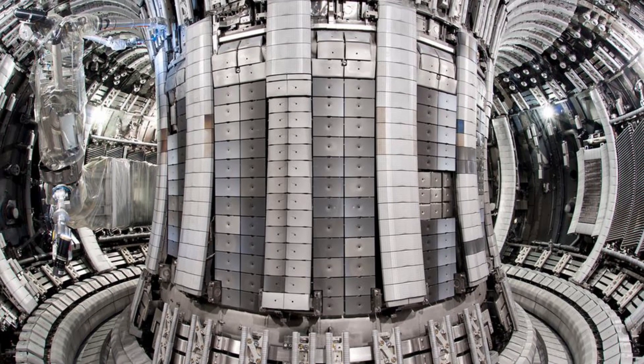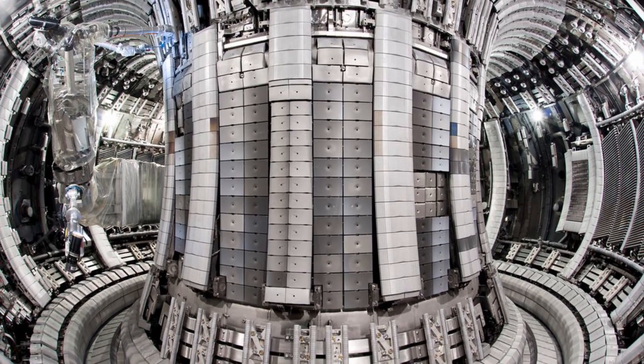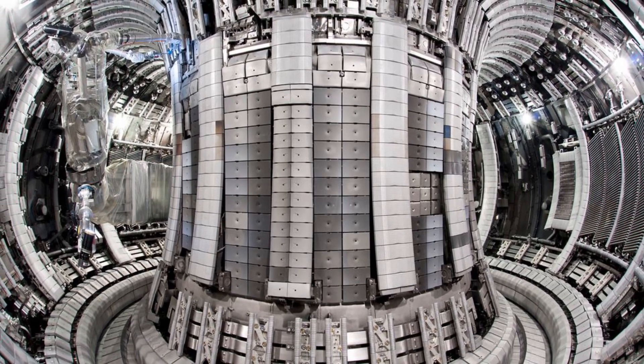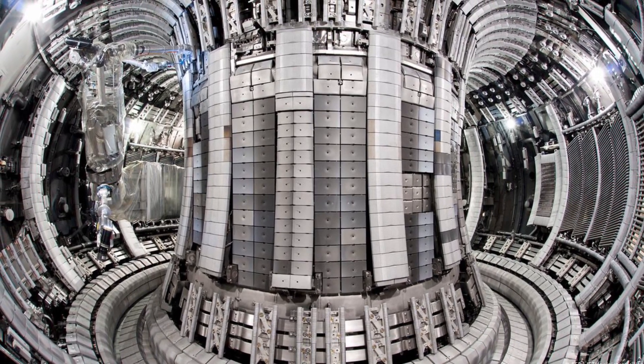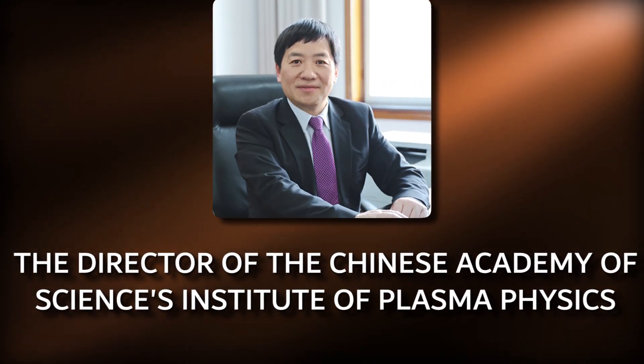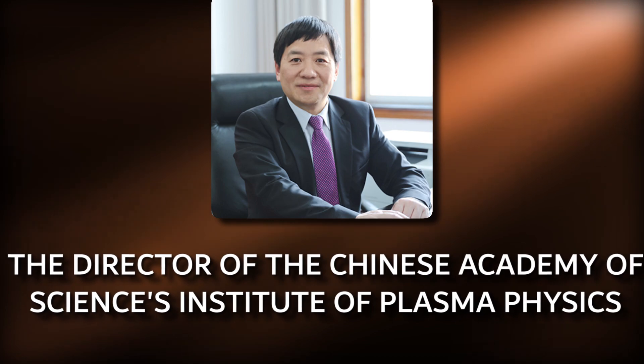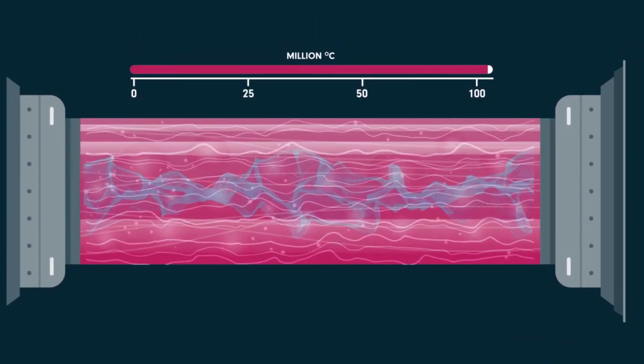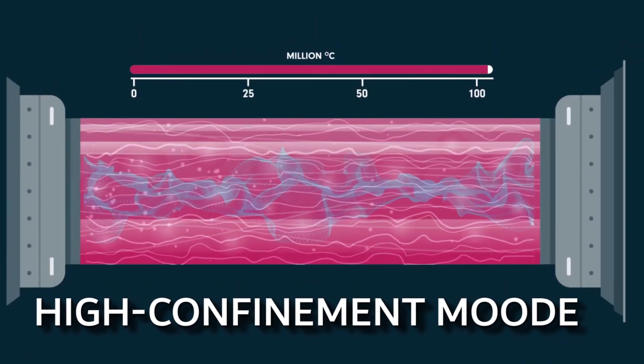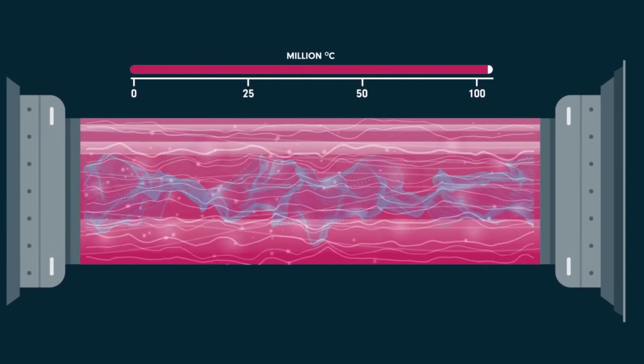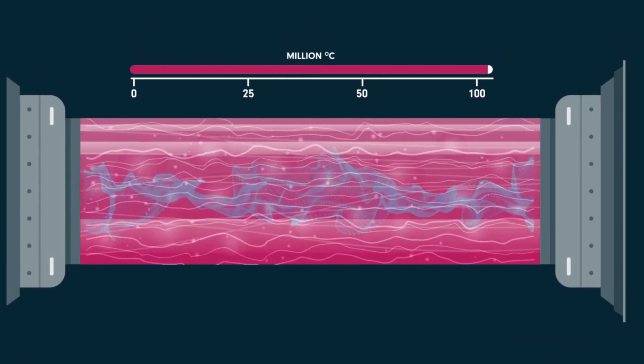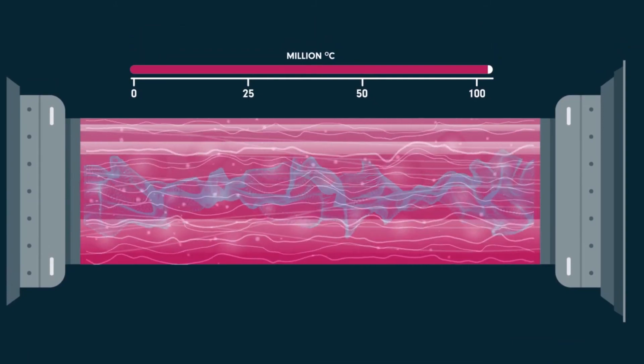While the East reactor has sustained plasma for longer periods before, the recent breakthrough is significant due to the unique state in which the particles were maintained. According to Song Yun Tao, the director of the Chinese Academy of Sciences Institute of Plasma Physics, the plasma was sustained in a high-confinement mode. This mode supports higher temperatures and particle density, and thus lays the foundation for more efficient power generation.